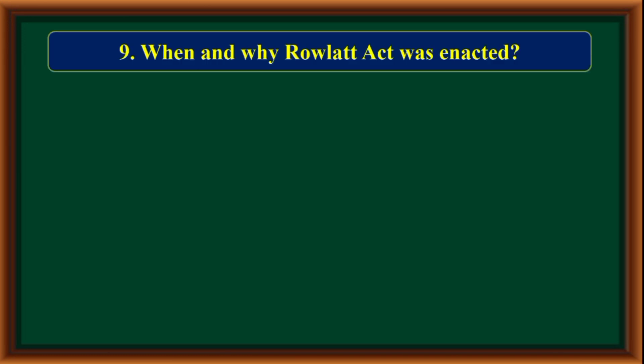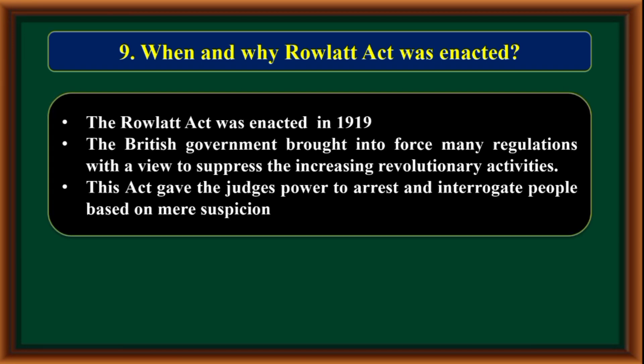When and why was the Rowlatt Act enacted? The Rowlatt Act was enacted in 1919. The British government brought into force many regulations to suppress the increasing revolutionary activities. This act gave judges the power to arrest and interrogate people based on mere suspicion.